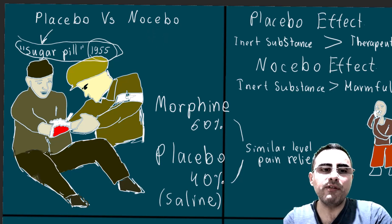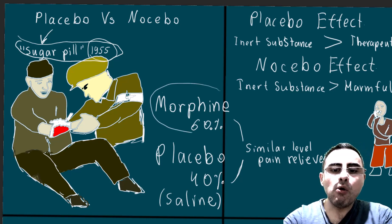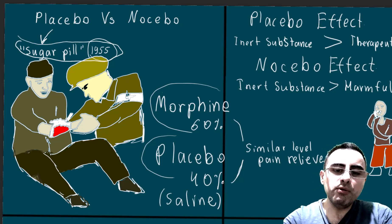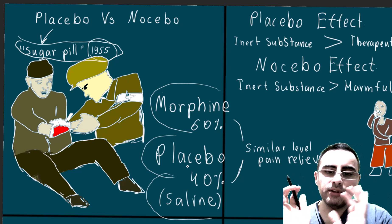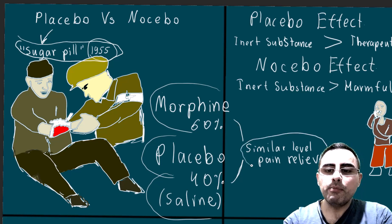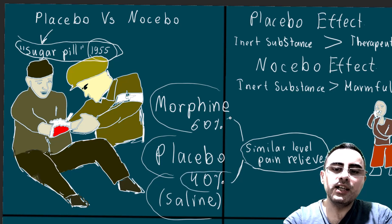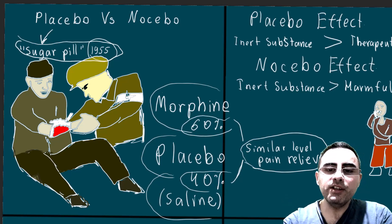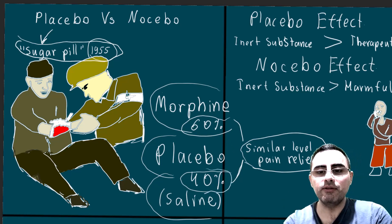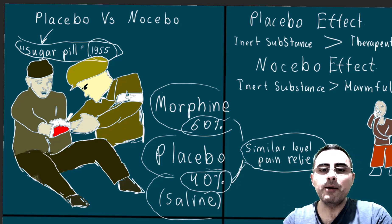Let's discuss placebo and nocebo effects. I want to start with a study from 1955 where soldiers were given morphine or placebo for pain relief. The placebo was simply water, and there was similar pain relief — placebo was effective in 40 percent of cases and morphine was effective in 60 percent. So morphine was superior, but placebo was also effective in 40 percent with a similar level of pain relief. It was a huge discovery.